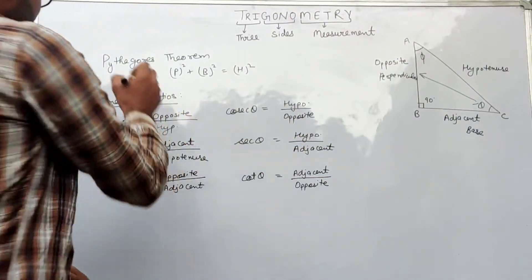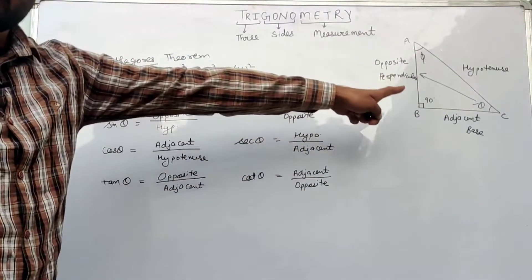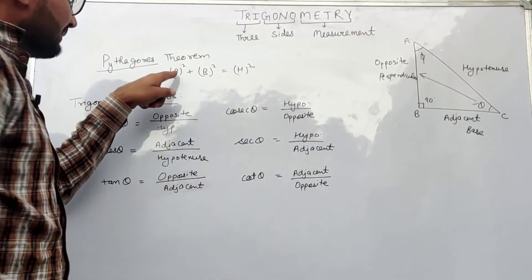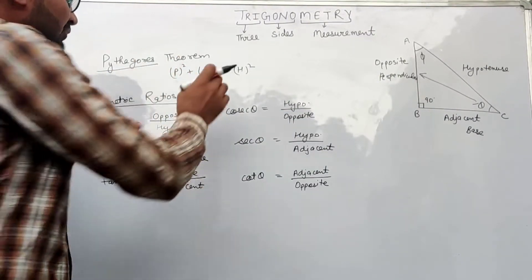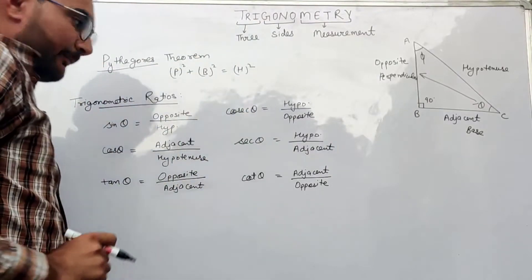Now we know that Pythagoras theorem is always used in a right angle triangle, where perpendicular squared plus base squared is equal to hypotenuse squared.